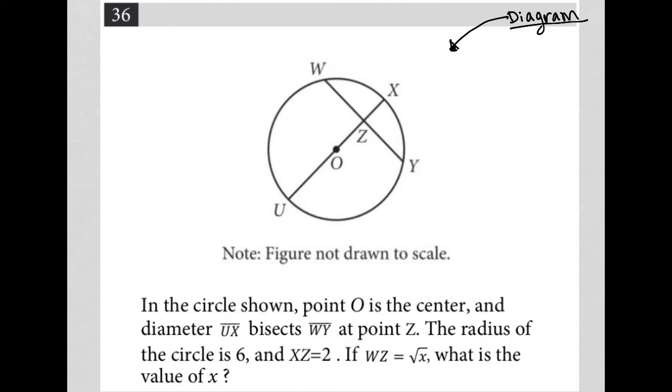So the question says, in the circle shown, point O is the center. Yep, we saw that. And the diameter UX bisects WY at point Z. Okay, so we see it, but I didn't realize that.